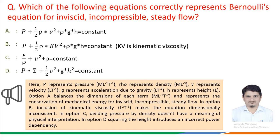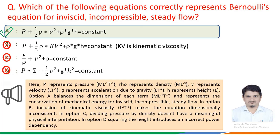Please recall: pressure has dimensions M·L⁻¹·T⁻², density ρ has dimensions M·L⁻³, velocity V has dimensions L·T⁻¹, g has dimensions L·T⁻², and H represents height L. Option A balances dimensionally and represents conservation of mechanical energy for inviscid, incompressible steady flow. In option B, inclusion of kinematic viscosity makes the equation dimensionally inconsistent. In option C, dividing pressure by density doesn't have a meaningful physical interpretation. In option D, squaring the height introduces an incorrect power dependency. Therefore, the correct answer is option A: P + ½ρV² + ρgH = constant.